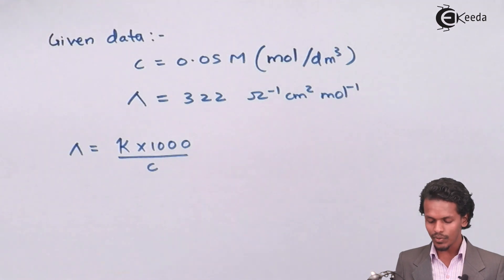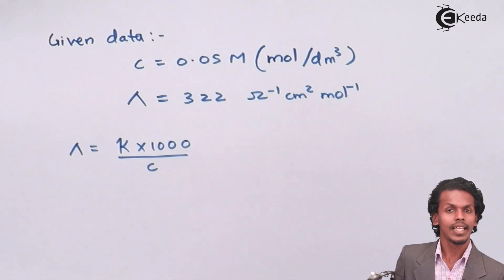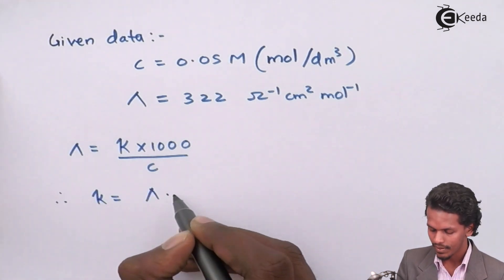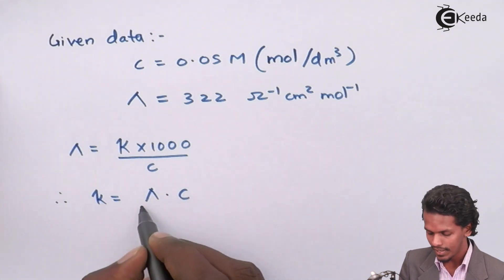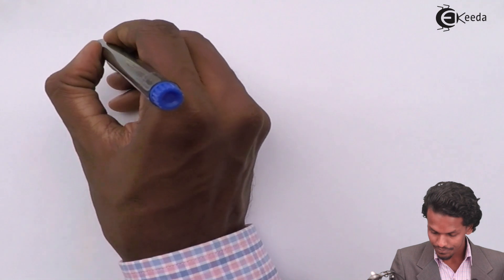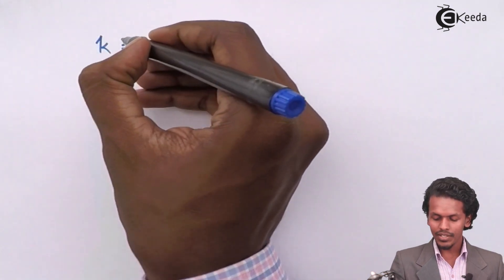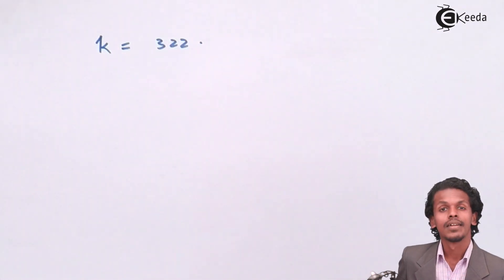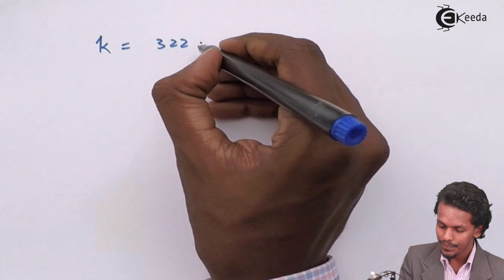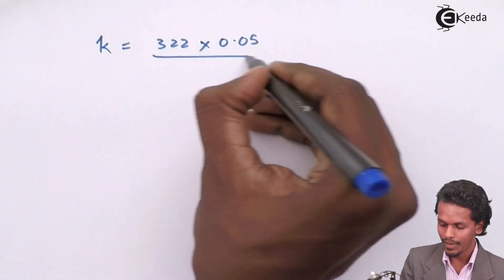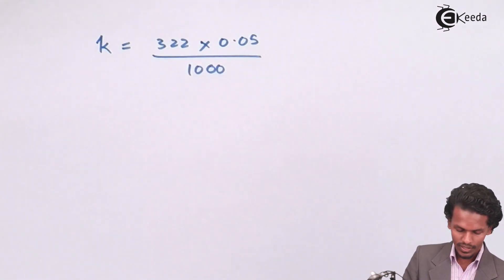Kappa equals molar conductivity times concentration divided by 1000. Now we substitute the values. Kappa equals capital lambda times the concentration 0.05 divided by 1000.